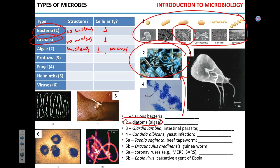Protozoa are unicellular organisms that do not have a cell wall — only a cell membrane — and do have a nucleus, so they are nucleated. They are always unicellular. An example of protozoa is Giardia lamblia, the causative agent of a chronic diarrheal disease called giardiasis, also known as beaver fever.